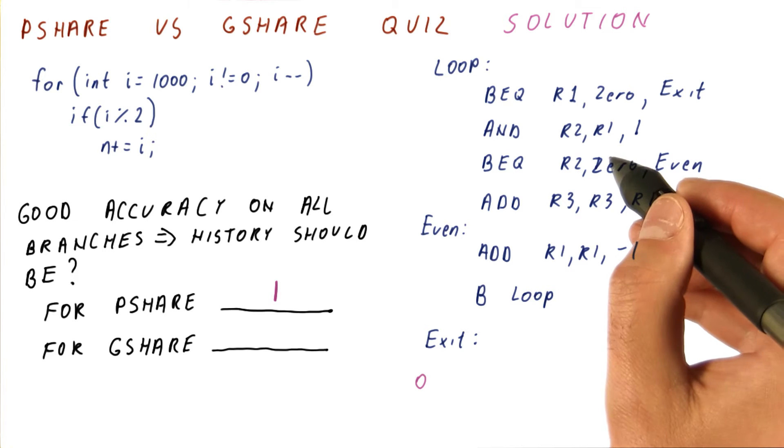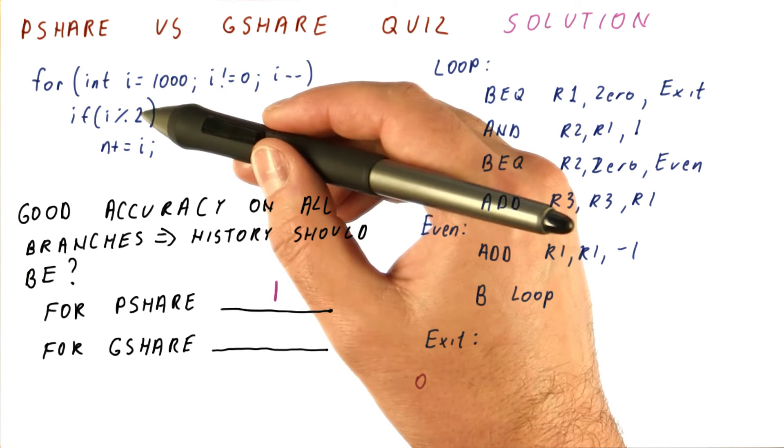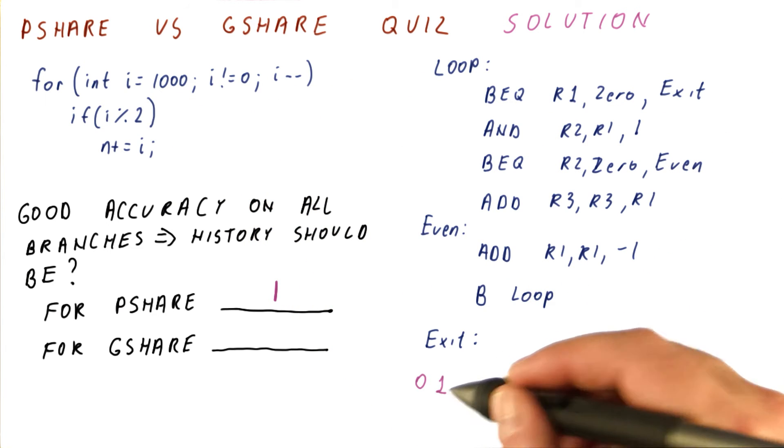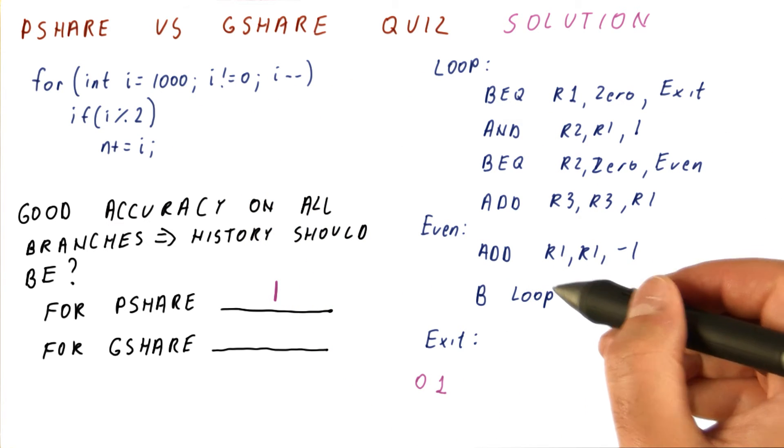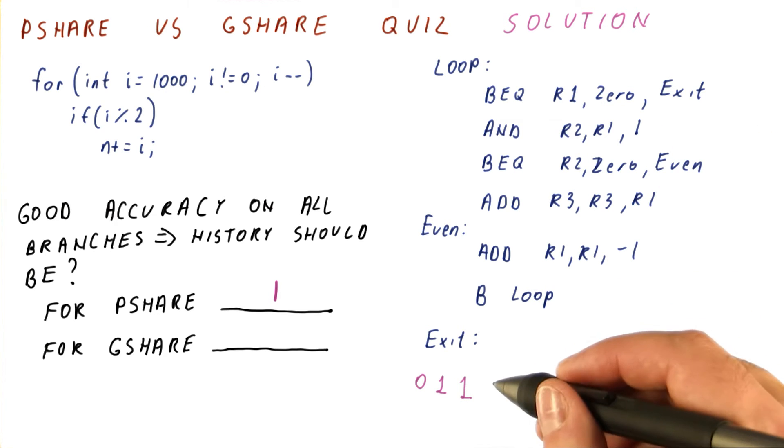This branch in the very first iteration, because i is 1,000, that's divisible by two, is taken because the number is even. This branch is then taken, then we have this branch, zero.